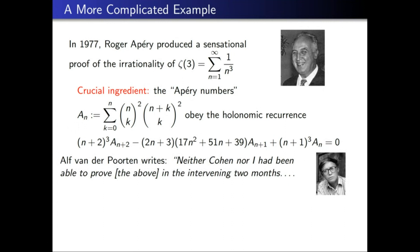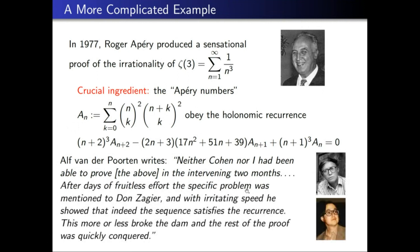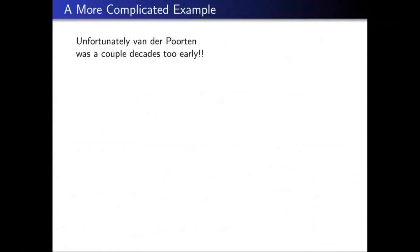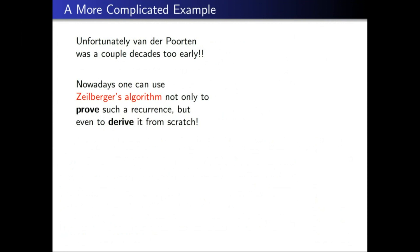When asked how he knew the recurrence, Apéry gave the cryptic answer: 'They grow in my garden.' Van der Poorten and Henry Cohen were unable to prove it in the two months before the International Congress. After days of fruitless effort, Don Zagier was consulted, and with irritating speed he showed the sequence satisfies the recurrence. This more or less broke the dam, but it had stumped these number theorists for months.